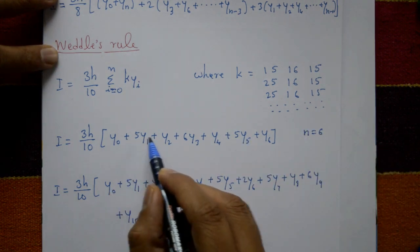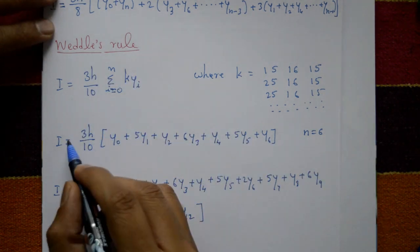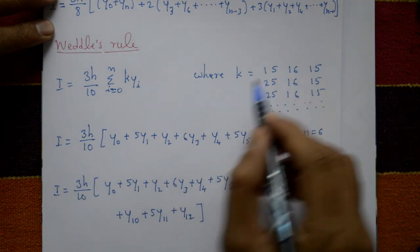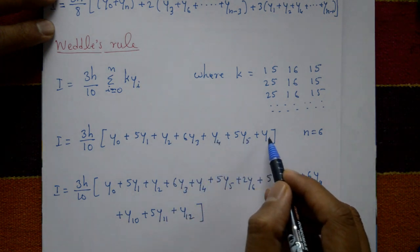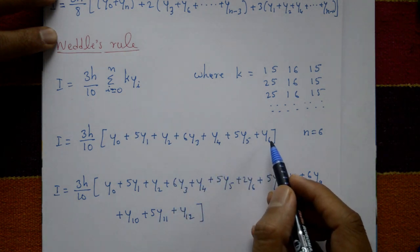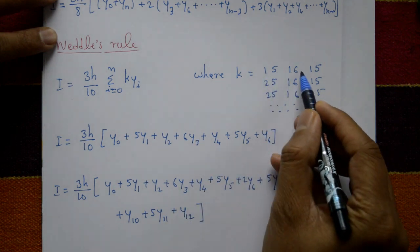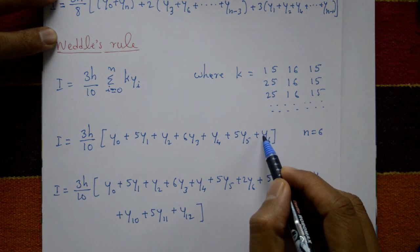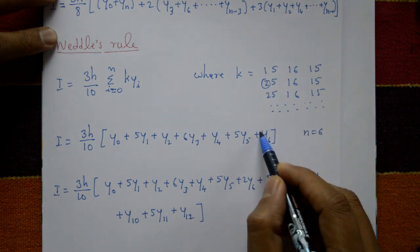For 7 ordinates (n=6), Weddle's rule gives: I = 3h/10 into (y0 + 5y1 + y2 + 6y3 + y4 + 5y5 + y6). The coefficients for y0 through y6 are 1, 5, 1, 6, 1, 5, 1. Since there are 7 ordinates, the multiplier at both ends is 1.